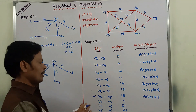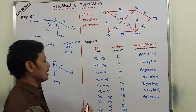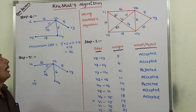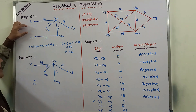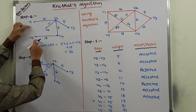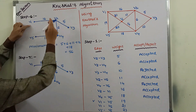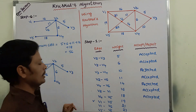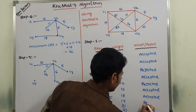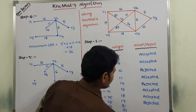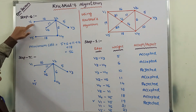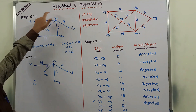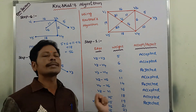Next, the minimum weight edge is V1 to V5, weight 19. After adding this edge V1 to V5, it can form a cycle: V1 to V2, V2 to V4, V4 to V5, V5 to V1. So this edge is rejected.